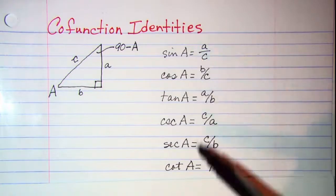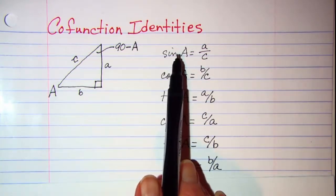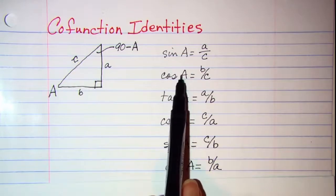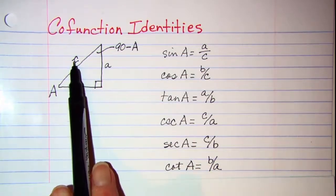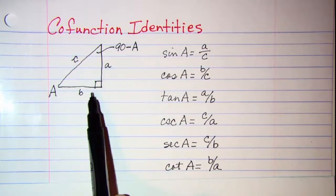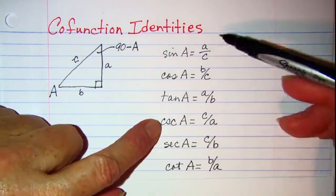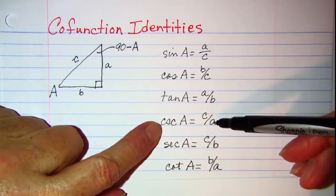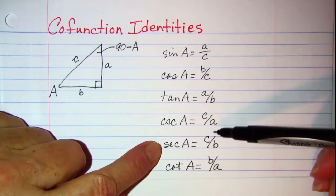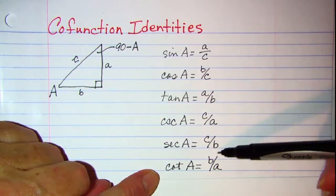I've gone ahead and written those trig function ratios down. The sine is opposite over hypotenuse, so sine of A is A over C. Cosine is adjacent over hypotenuse, so B over C. Tangent is opposite over adjacent, so A over B. Cosecant is the reciprocal of sine, so C over A. Secant is the reciprocal of cosine, so C over B. And cotangent is the reciprocal of tangent, so B over A.